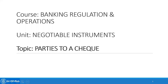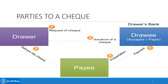Hello everyone, the course name is Banking Regulation and Operations. The unit is Negotiable Instruments and the topic that I'll be covering in this presentation is the Parties to a Check. Coming to the concept or the terminology called Parties to a Check.